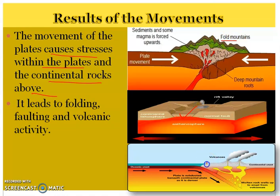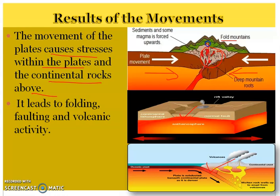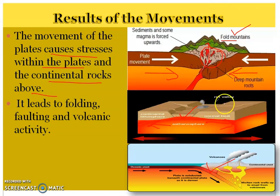The movements of these plates cause stresses within the plates and the continental rocks above, which leads to folding, faulting, and volcanic activity. When two plates move towards each other, the sedimentary rocks lying in between start rising up, get folded, and thus lead to the formation of fold mountains. When two plates move away from each other, a crack appears in between, resulting in the formation of rift valleys. Volcanoes are located on the plate margins.